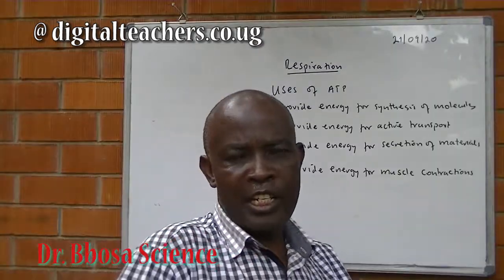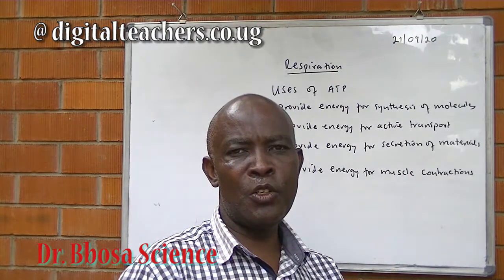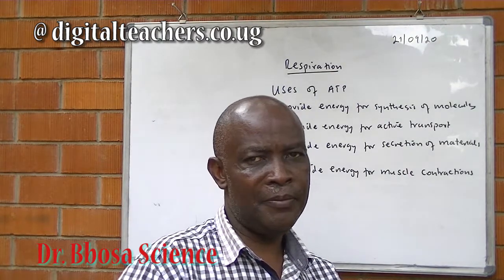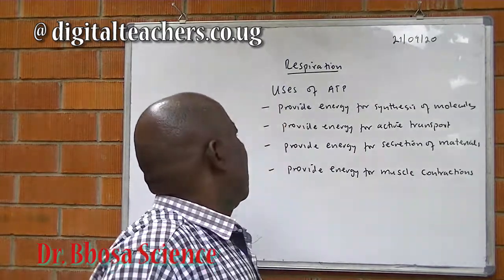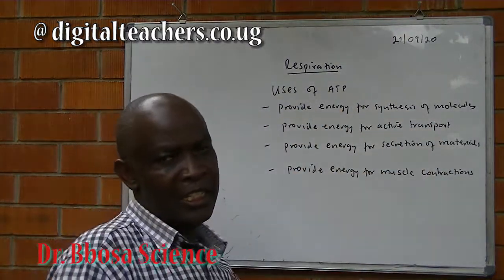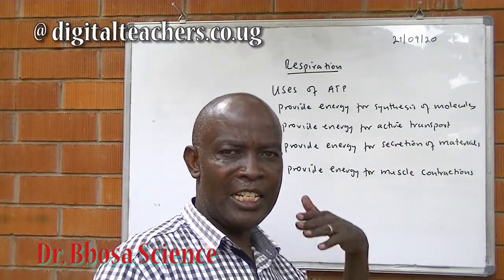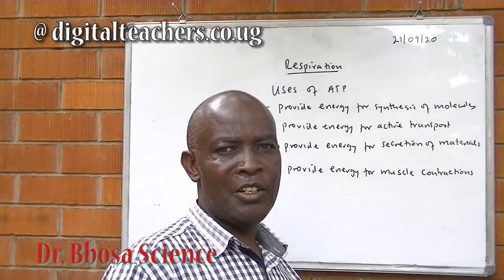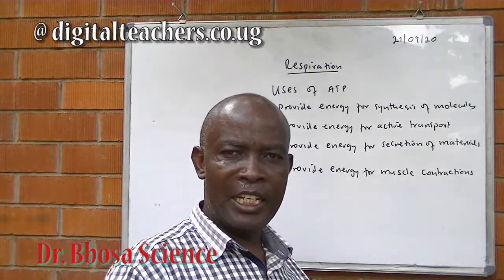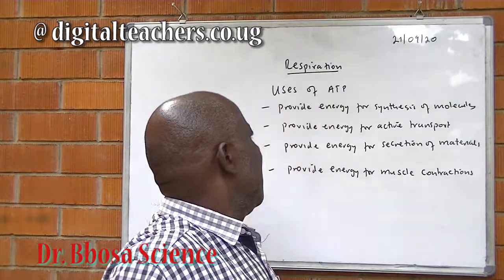Uses of ATP. ATP is the immediate energy source in the body for the cells. It provides energy for synthesis of molecules, such as in the photosynthetic pathway. When you are synthesizing carbohydrates, you need energy. Synthesizing proteins, enzymes, and hormones will all need energy from ATP.